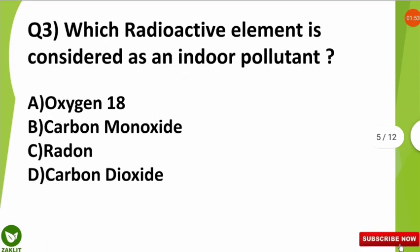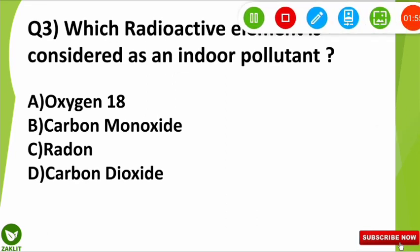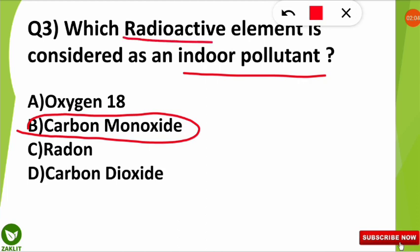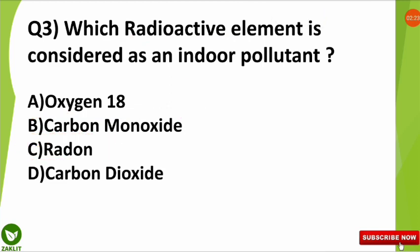The next question was: which radioactive element is considered an indoor pollutant? Note that carbon monoxide is also known as an indoor pollutant, but here it was asking about a radioactive element, so the correct option is radon. Other examples of indoor pollutants include carbon monoxide, asbestos, and formaldehyde, which is formed from pressed wood products.